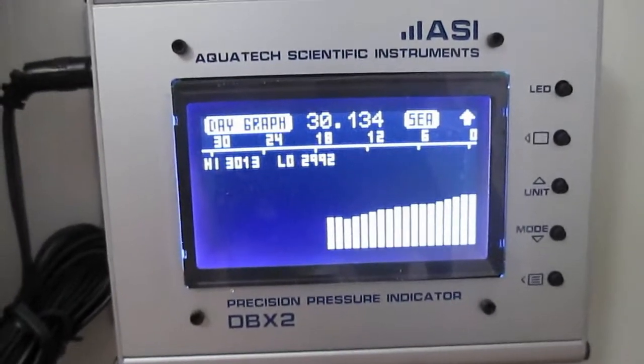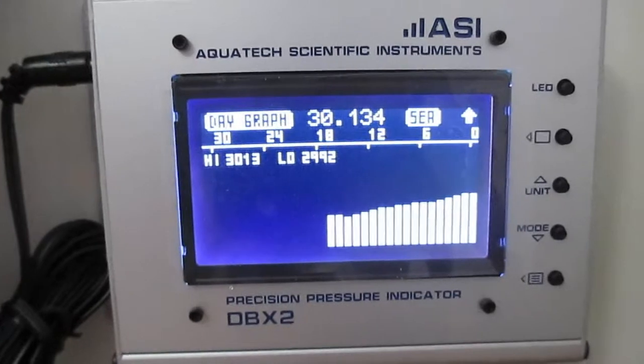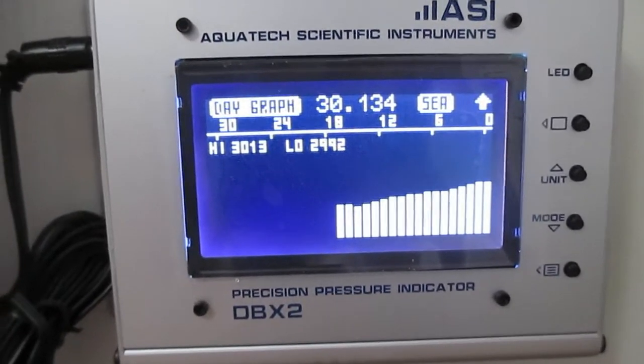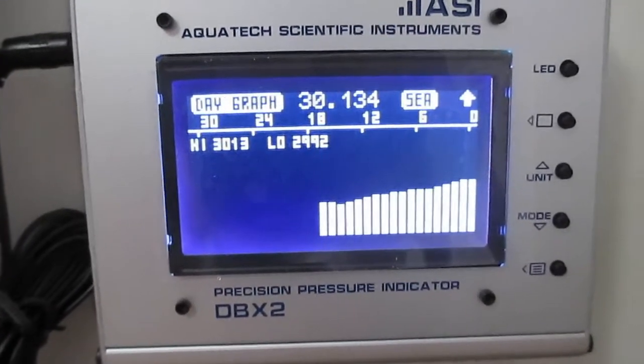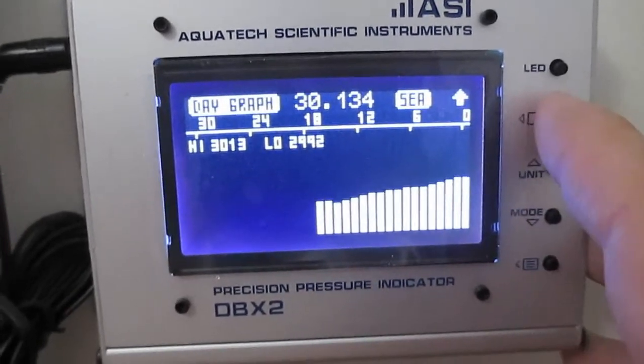You can see what the current pressure is at the top, 30.13, the day graph at sea level, and the high and low for the period so far. And then you press this again.